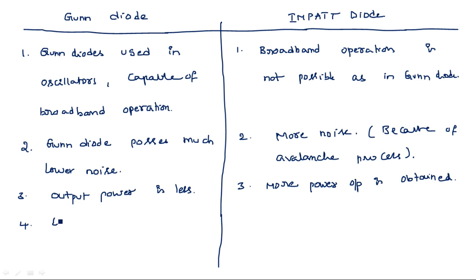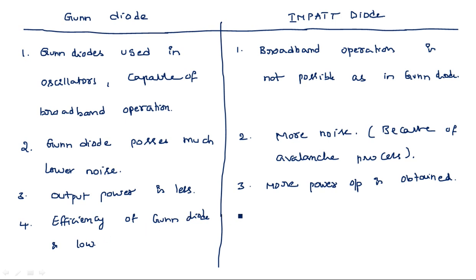Fourth difference: Efficiency of the Gunn diode is low. The Gunn diode works with the Gunn effect, which is the two-valley region. So efficiency is low for the Gunn diode.